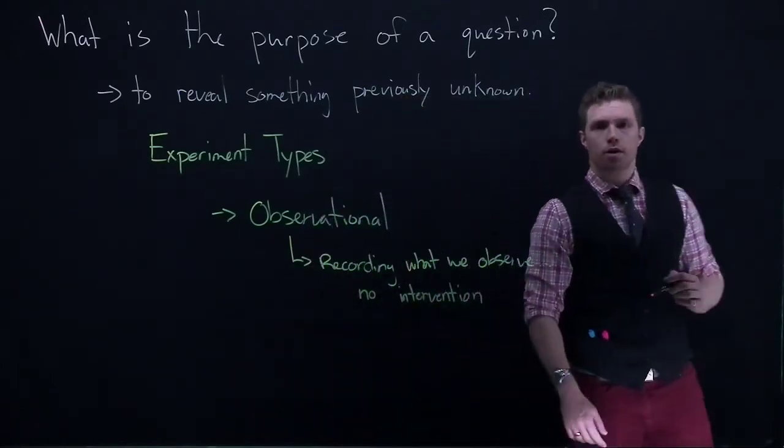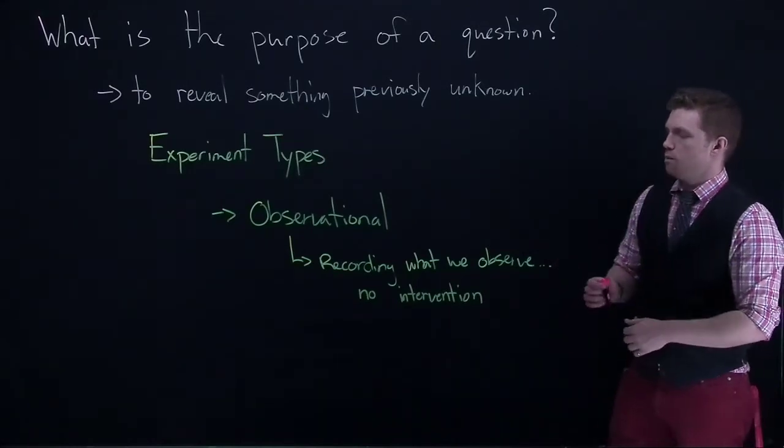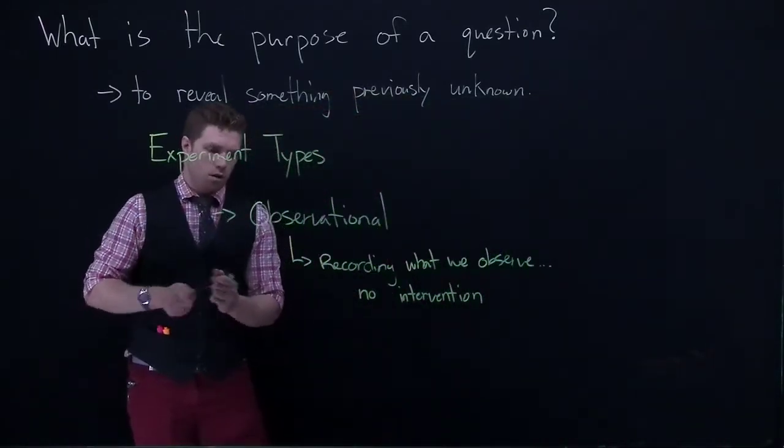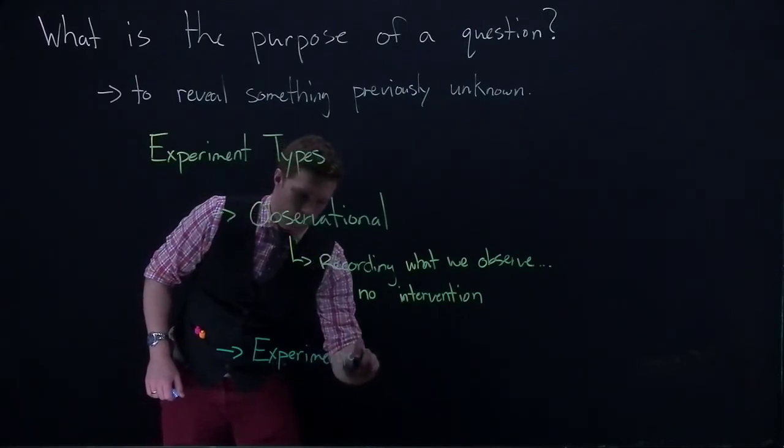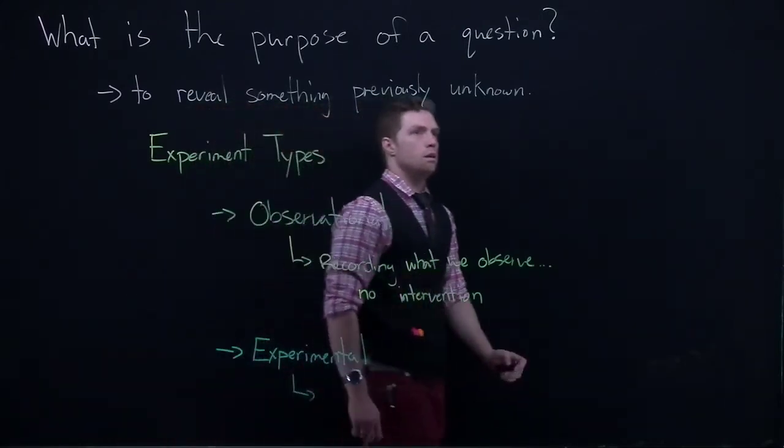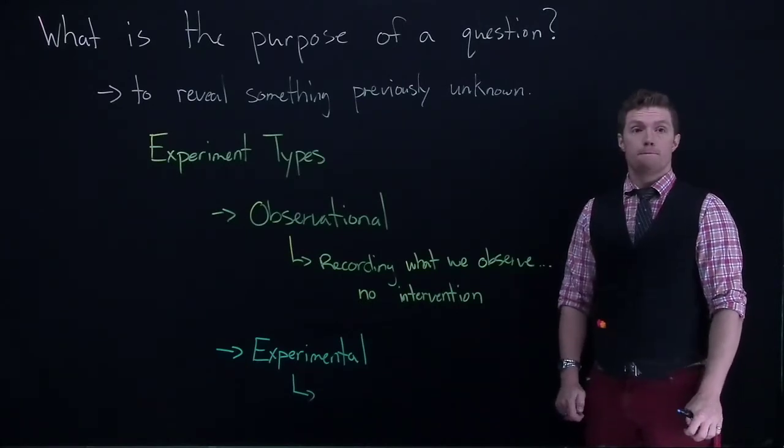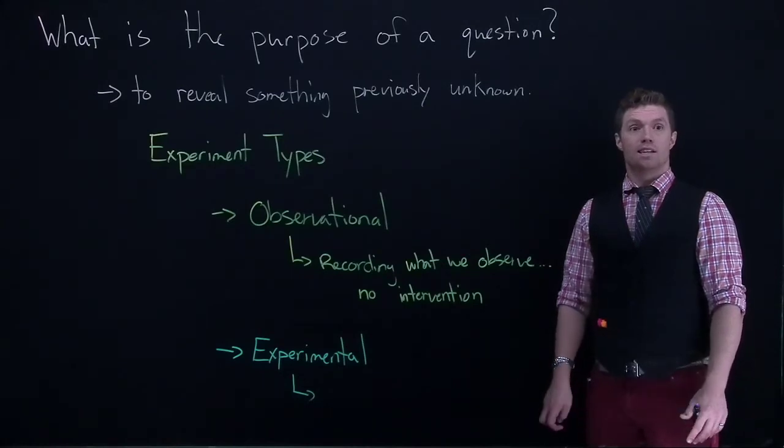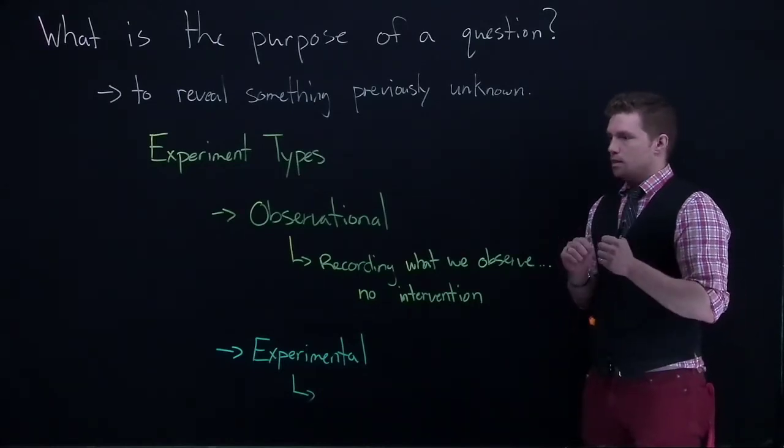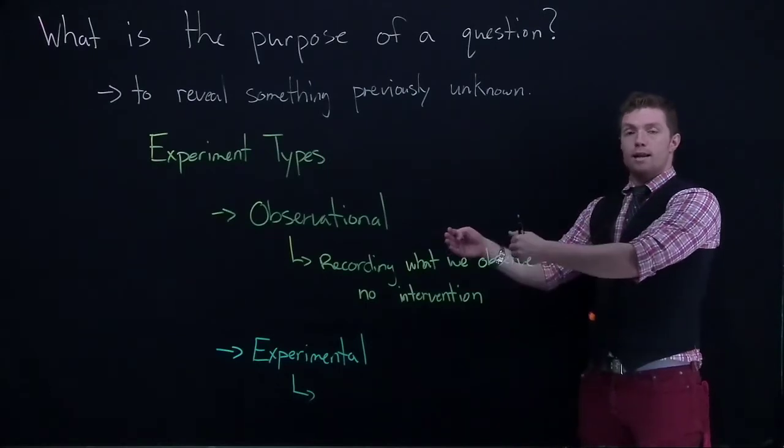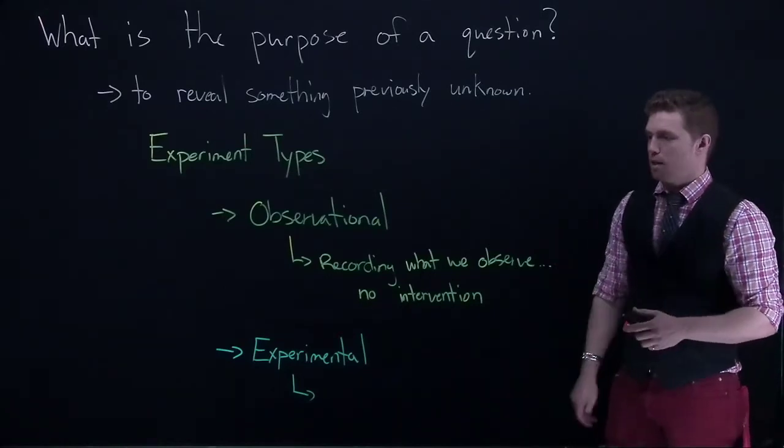So all we're doing in observational studies is just watching, that's it. So that's number one. And number two that we can do is called experimental. Okay, so experimental experiments are different in the fact that we generally are providing one group a treatment and we're going to compare them to a group that doesn't have a treatment. We want to split them up into groups and we are going to try to intervene or show like this group had treatment A, this group had treatment B, and we're looking at the difference between them. We are actually experimenting upon them.